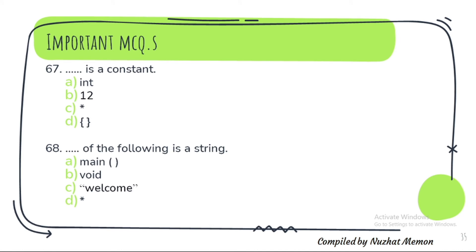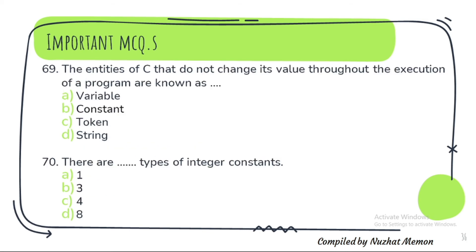Question 67: 12 is a constant. Question 68: Which of the following is a string? The correct option is C — 'welcome' written in double quotes. Question 69: The entities of C that do not change their value throughout the execution of a program are known as constants.